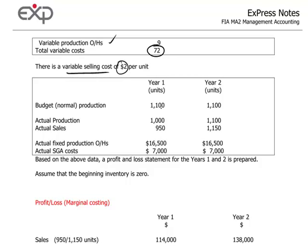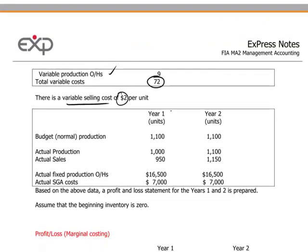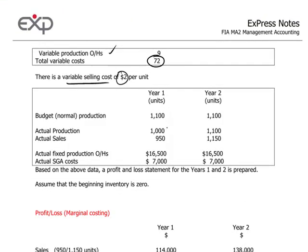Based on the following data: actual production performed is 1,000 units, and actual sales achieved are 950 units. Actual fixed production overheads turned out to be $16,500, and in both years it remains the same, along with the selling, general, and administrative costs.